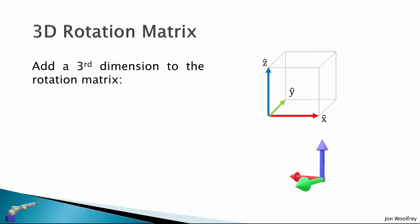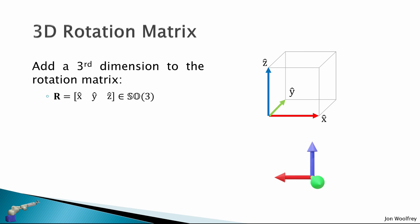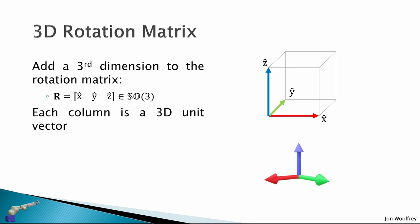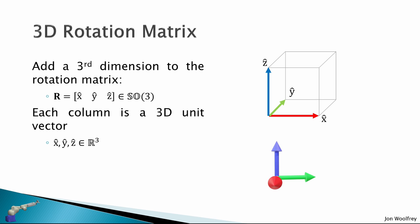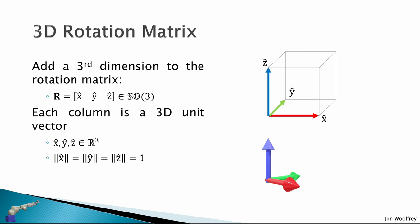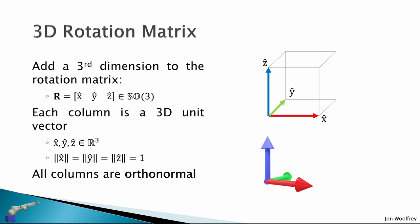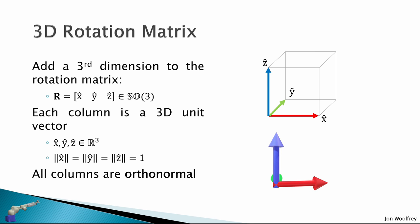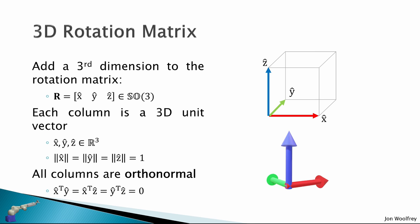We add a third dimension to the rotation matrix, and now we have our rotation matrix with unit vectors in X, Y, and Z. We say that this is in the special orthogonal group in three dimensions. Each column of this rotation matrix is a 3D unit vector, so X-hat, Y-hat, Z-hat are in the set of real values in three dimensions. The norm of each of these vectors is 1 because they're unit vectors. All of these columns are orthonormal — meaning they're orthogonal to each other and their magnitude is 1. Taking the transpose of each vector dotted with another column vector gives 0, so they're at 90 degrees to each other.